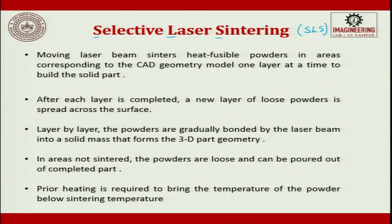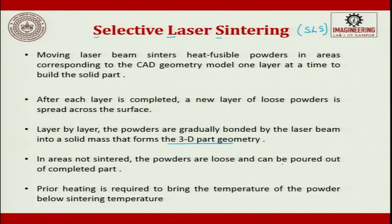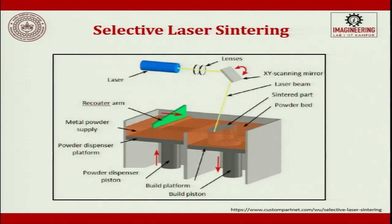Once a layer is complete, the platform moves down by one layer thickness as defined in the CAD program. The metal powder container moves up and a roller picks the material and spreads it on top of the table. Layer by layer, the powders are gradually bonded by the laser beam into a solid mass that forms the 3D part geometry. In areas not sintered, the powders remain loose and can be poured out of the completed object.